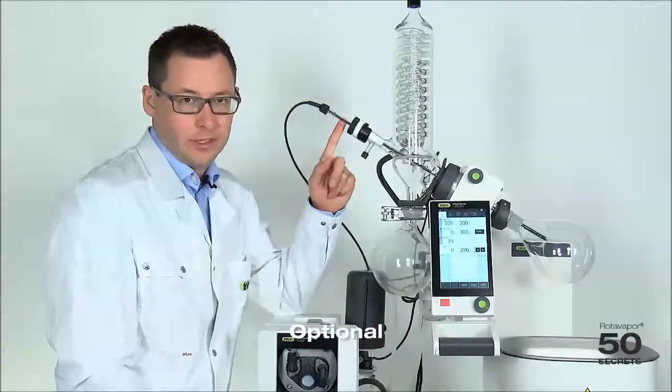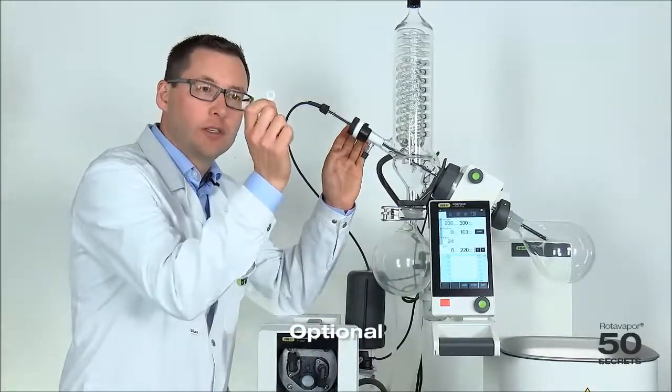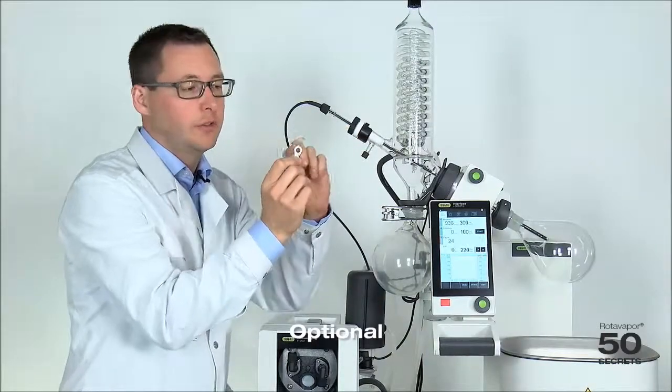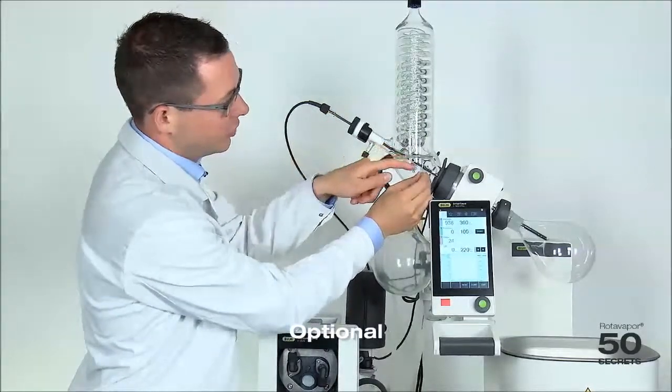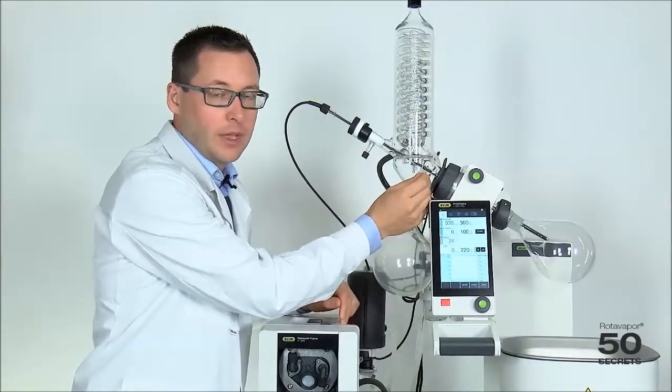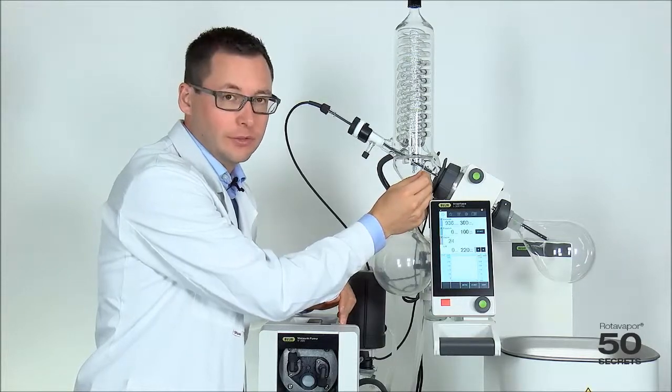Together with the foam sensor, you get delivered with this drain disc. This drain disc is used so that the droplets which form on the foam sensor don't go back into the evaporating flask. I would like to show you how to mount this.